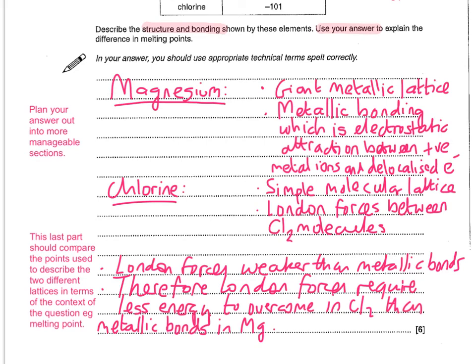When you come across this type of question — five, six, or seven marks, with lots of space to write — state the obvious things about the lattices, making sure you're not making mistakes such as saying covalent bonds break in chlorine. Lay out your ideas in simple bullet points, and if it helps use subheadings like 'magnesium' and 'chlorine'. You must at the end bring your ideas together and make comparative statements: London forces are weaker than metallic bonds, so London forces require less energy to overcome. A little forward planning is massively helpful.